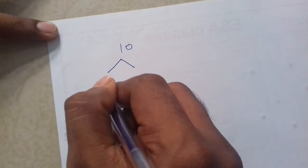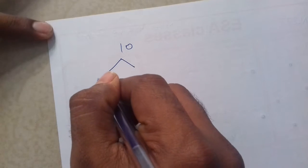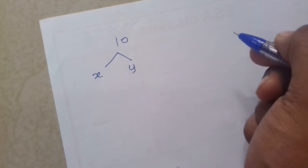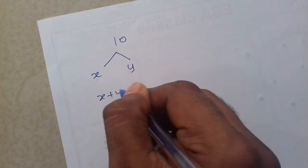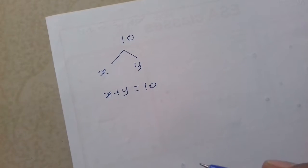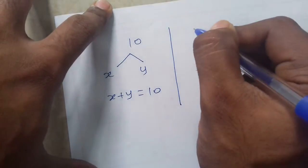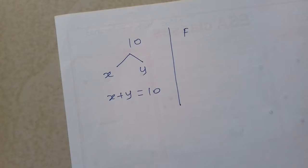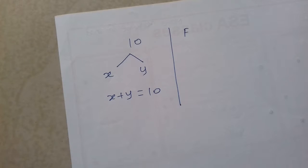So 10 coulomb should be distributed into two charges. Pahila wala charge is unknown, usko assume karenge x. Second charge is also unknown, usko assume karenge y. But x plus y kitna chahiye? Total charge provided is 10, so x plus y is 10. Now, jisko maximum karna hai that is the function - we are supposed to maximize force, so force is the function.